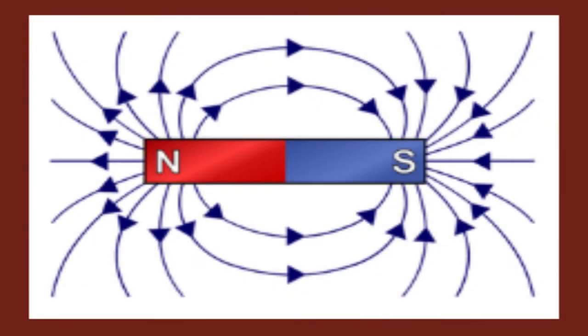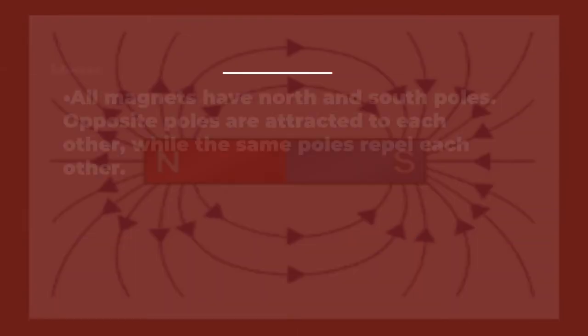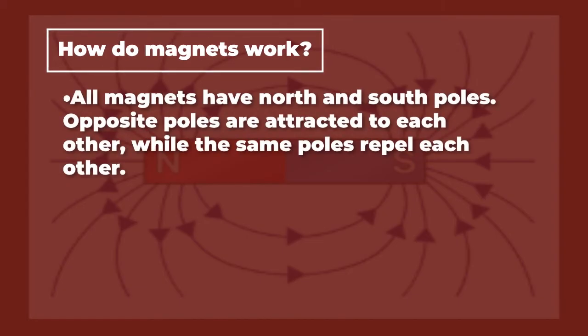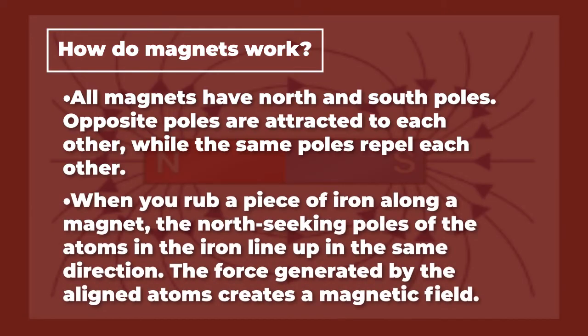How do magnets work? All magnets have north and south poles. Opposite poles are attracted to each other, while the same poles repel each other. When you rub a piece of iron along a magnet, the north-seeking poles of the atoms in the iron line up in the same direction. The force generated by the aligned atoms creates a magnetic field.